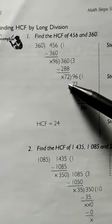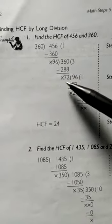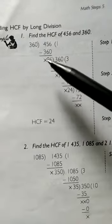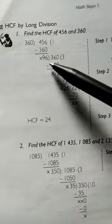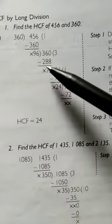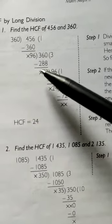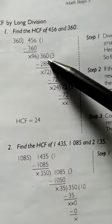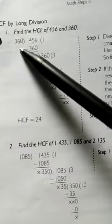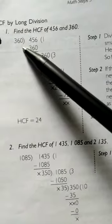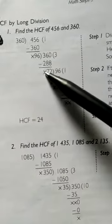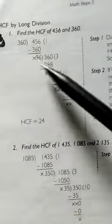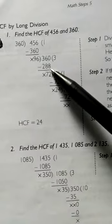In Step 2, if there is a remainder, take it as the new divisor. Here the remainder is 96, so we take 96 as the new divisor. The previous divisor becomes the new dividend — so the new dividend is 360 and the new divisor is 96.